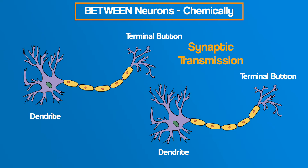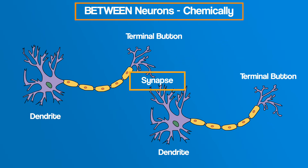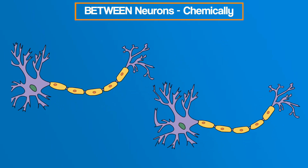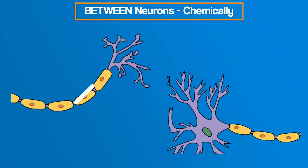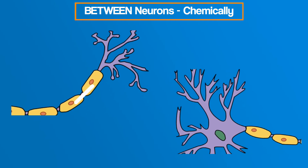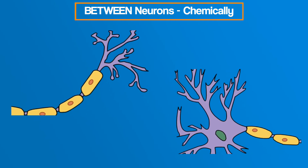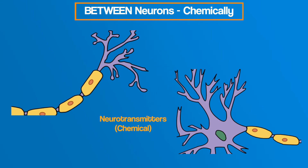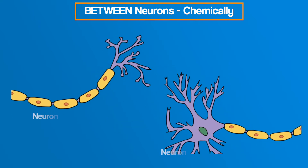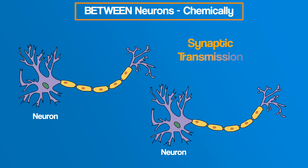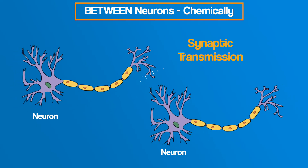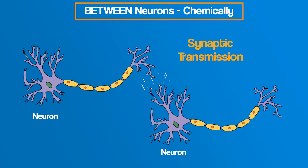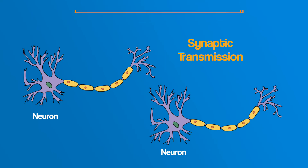Neurons do not actually touch one another. Each neuron is separated from the next by a tiny gap called the synapse. Synapses allow messages to travel from one neuron to an adjacent neuron by transmitting signals chemically using neurotransmitters. In other words, synaptic transmission is where neurons send chemical messages across the synapse, which is the gap between neurons.